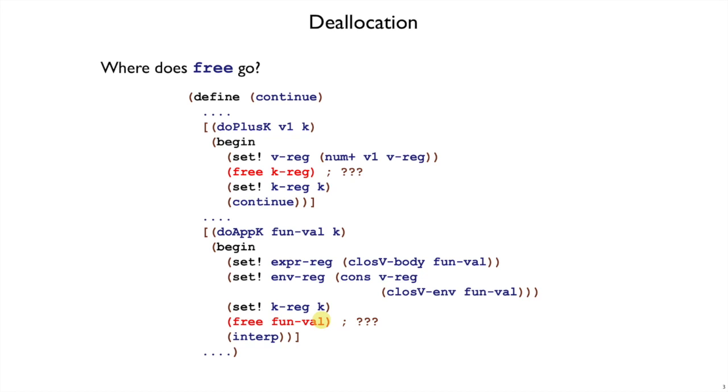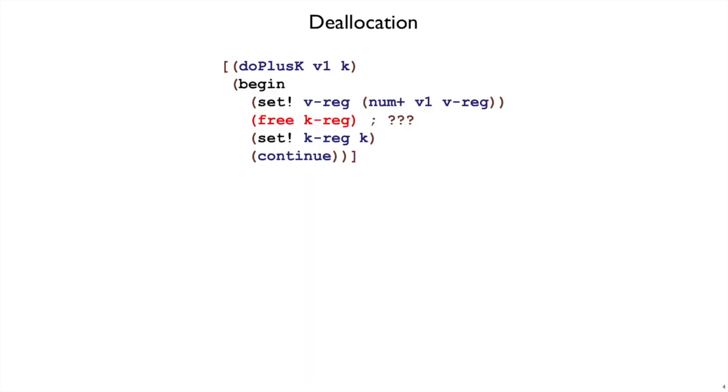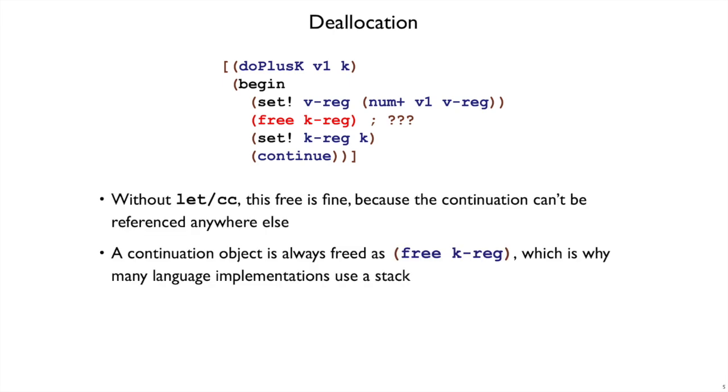Unfortunately, these may not be okay places to free the values. For example, in do plus k, this actually is okay, but it's only okay because we don't have let cc in our interpreter right now. If we don't have let cc, then the only reference to the continuation is in fact in this kreg, and so we can free it.